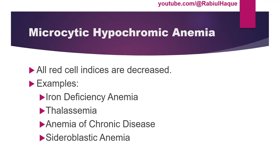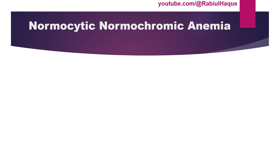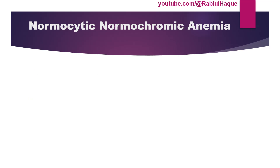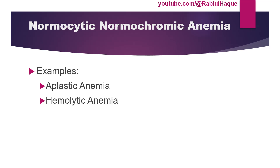The next group is normocytic normochromic anemia. Here MCV, MCH, and MCHC are all normal; however, the red blood cell count and hemoglobin level are reduced. Examples include aplastic anemia, hemolytic anemia, and anemia in acute hemorrhage. In these conditions the red blood cells have normal size and normal staining, but their numbers are reduced, which is why hemoglobin content is reduced, leading to anemia.